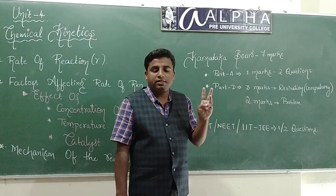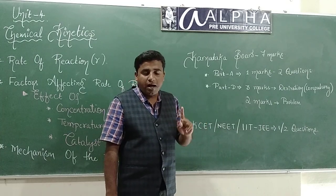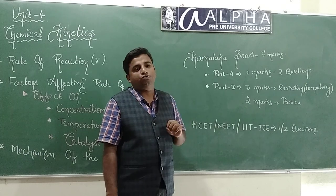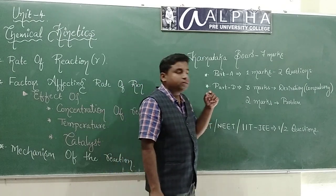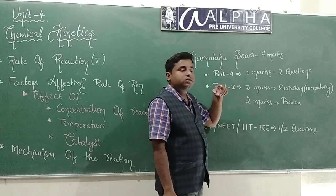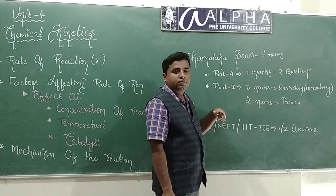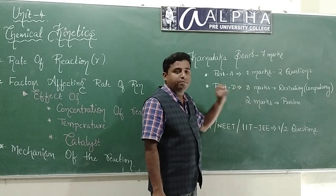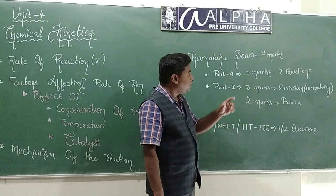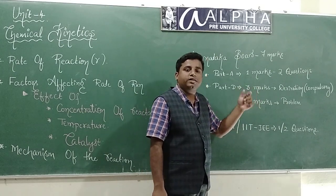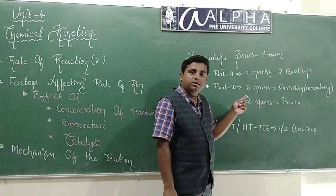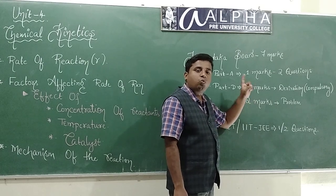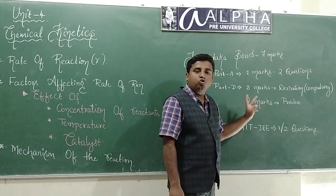The question paper contains four parts: Part A, Part B, Part C, and Part D. Part A is for one mark, Part B is for two marks, Part C is for three marks, and Part D is for five marks. In Part A you will get two questions, whereas in Part D you will have one question for five marks. The five marks question is divided as three plus two. For three marks you will get one compulsory question, which is a derivation, and for two marks you can expect a numerical.